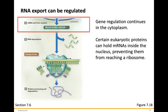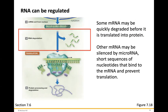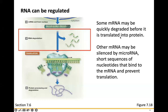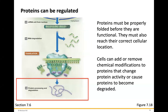Gene regulation can also continue in the cytoplasm. Certain eukaryotic proteins can hold messenger RNAs inside the nucleus, preventing them from reaching a ribosome. Some messenger RNAs may be quickly degraded before translation. Others may be silenced by microRNA — short sequences of nucleotides that bind to the messenger RNA and prevent translation. Proteins must also be properly folded before they are functional and must reach their correct cellular locations. Cells can add or remove chemical modifications to proteins that change protein activity or cause proteins to be degraded.